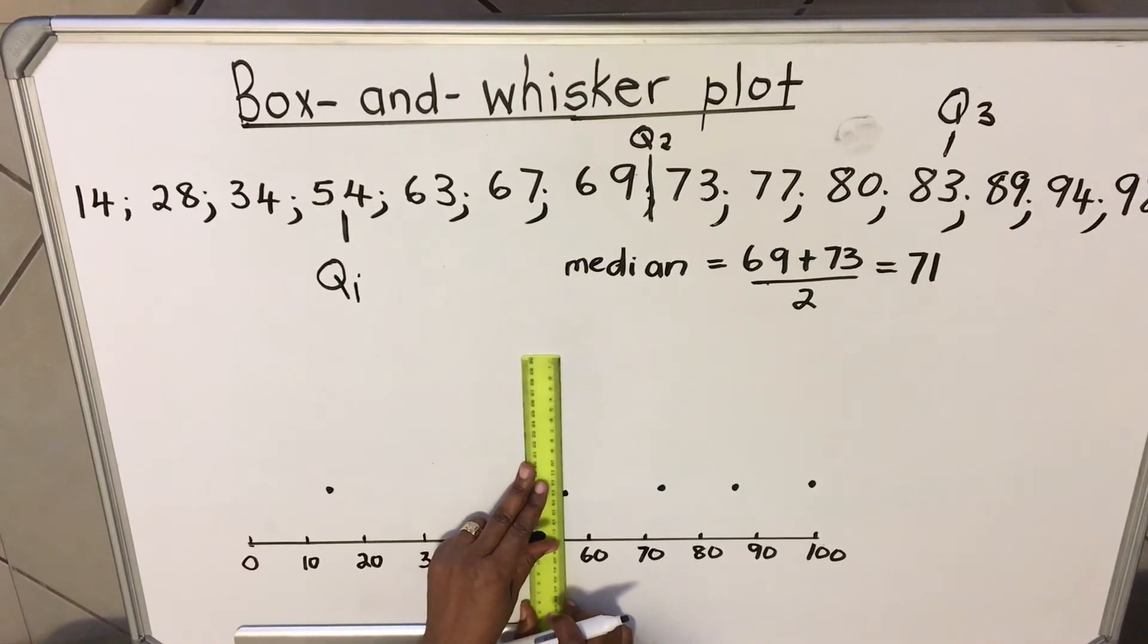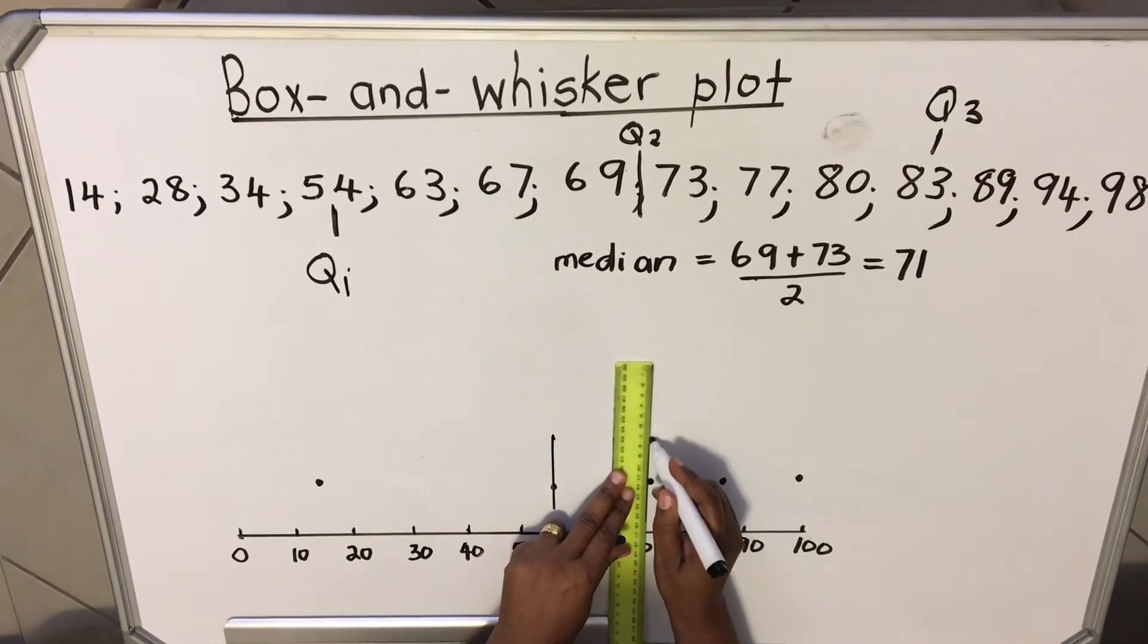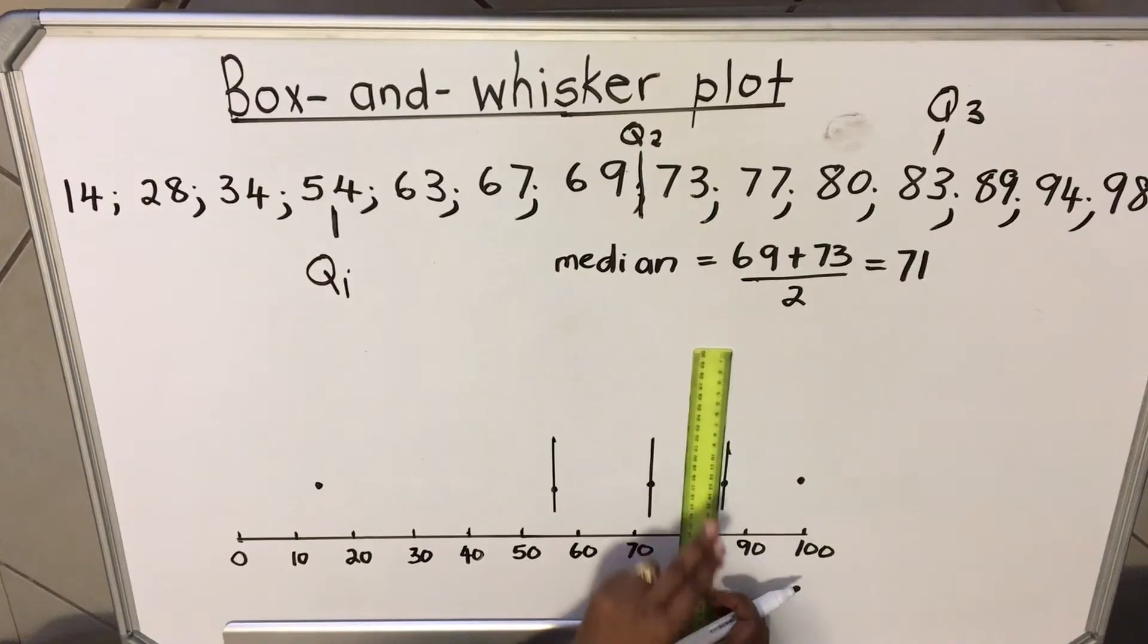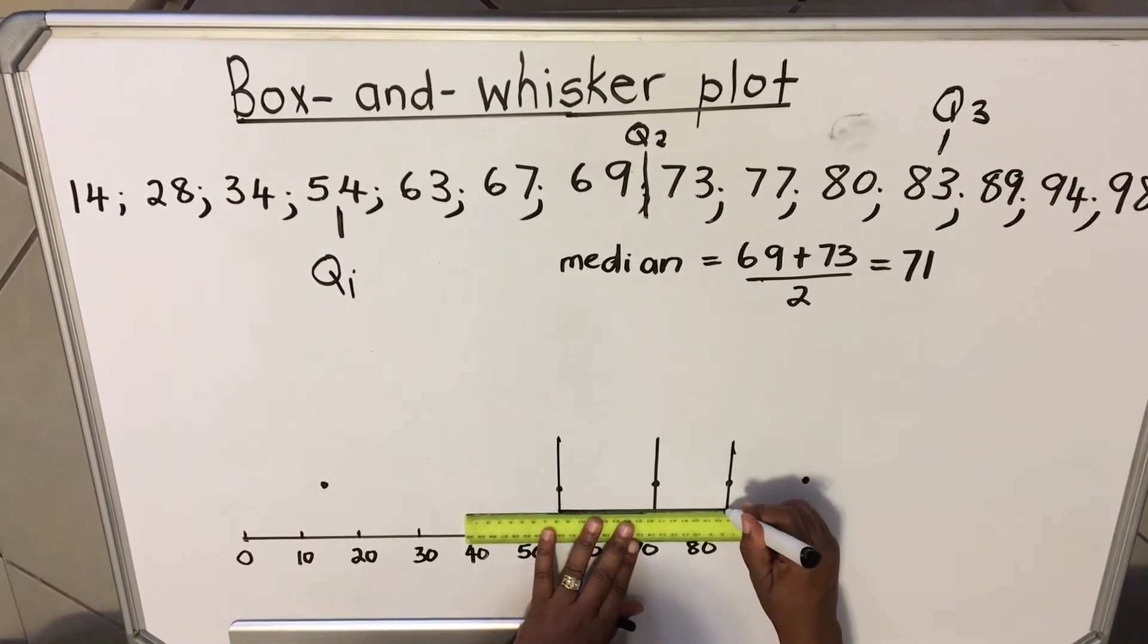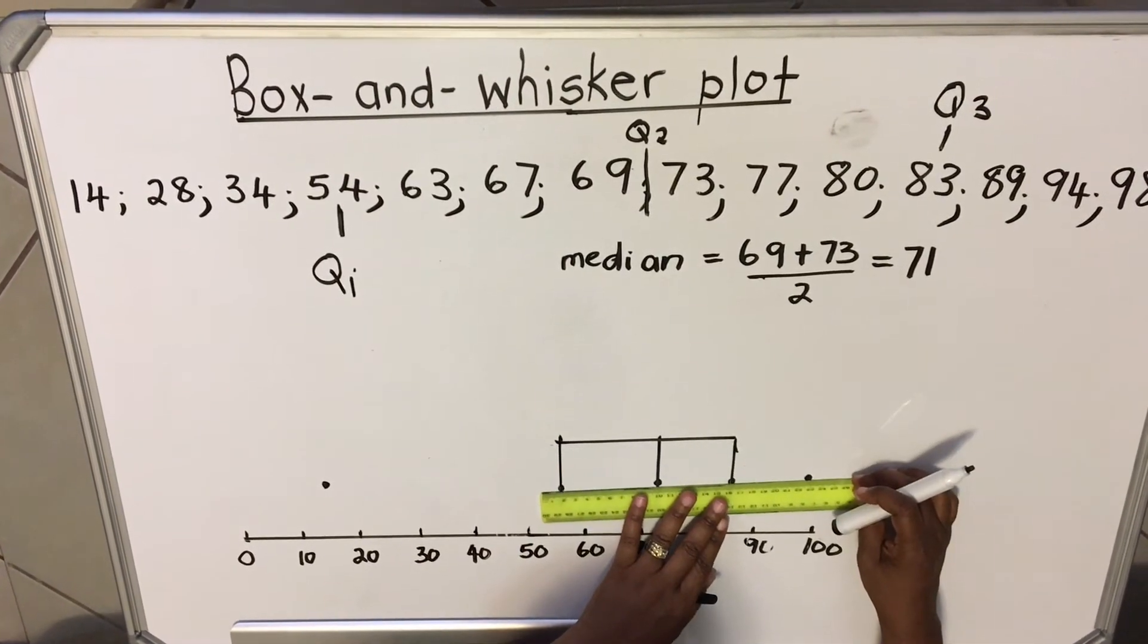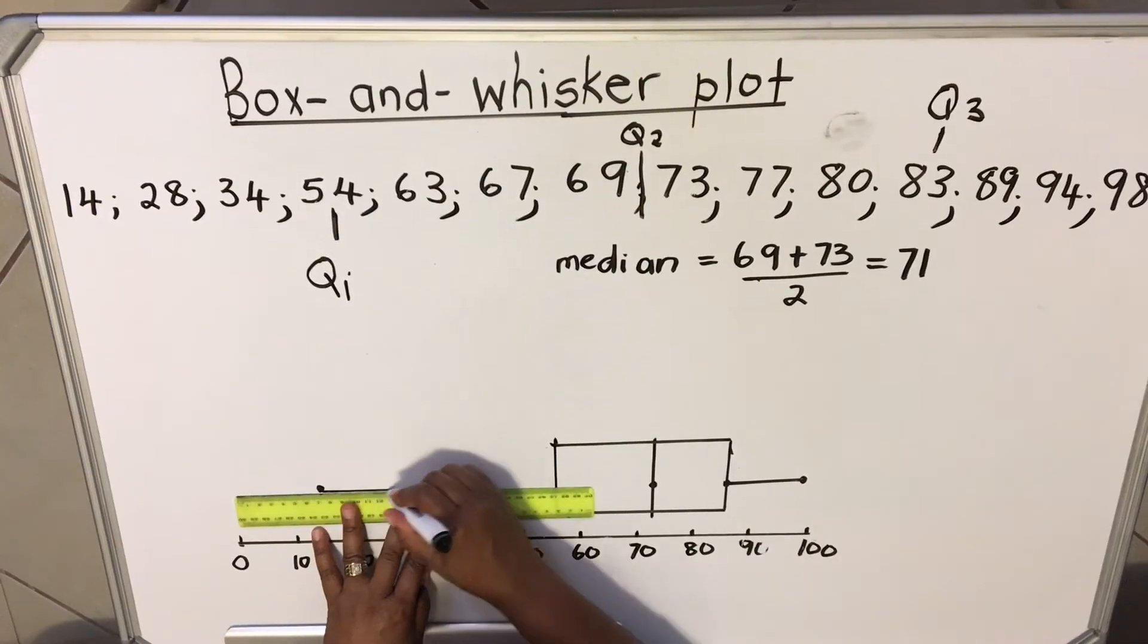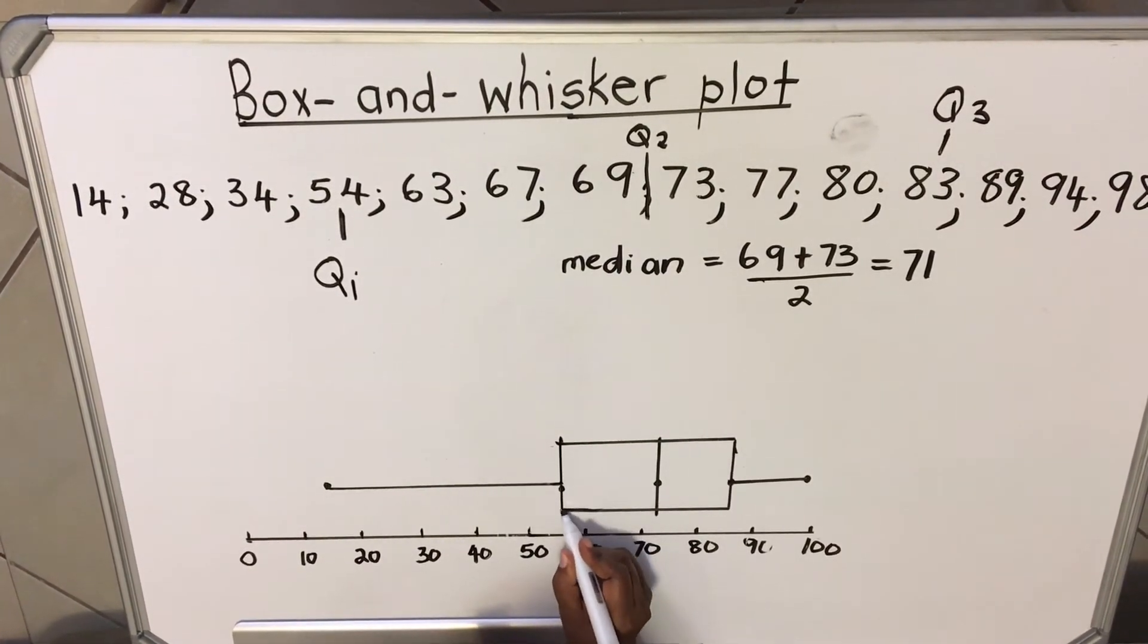So we're going to use these values now. We're going to draw a line that makes a box. That's where the box-and-whisker comes from. Then you make your box here, and then your whisker from Q3 to the highest value, draw a line. From Q1 to the lowest value, draw your line. This is how you draw your box-and-whisker.